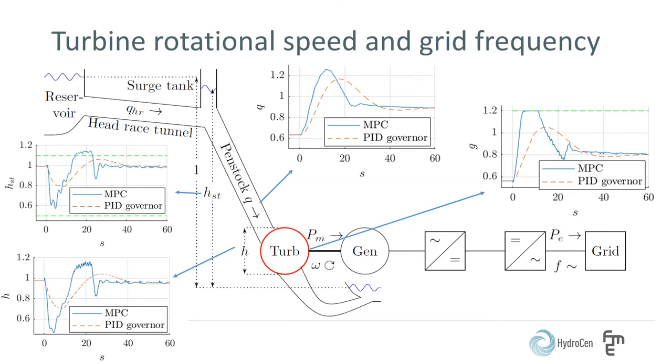The disadvantages of the MPC is that it causes additional oscillations in the hydraulic system, both low frequency oscillations between the reservoir and surge tank, called mass oscillations and higher frequency oscillations, called water hammering, as we see here from the two figures of the pressures in the system.